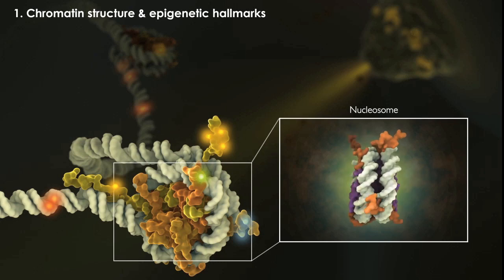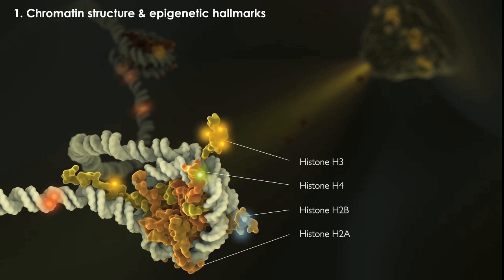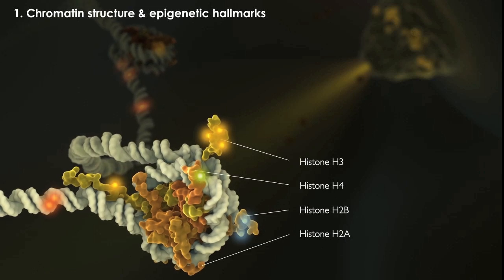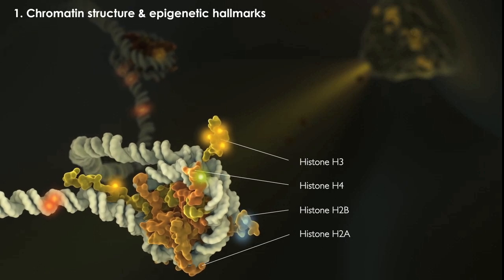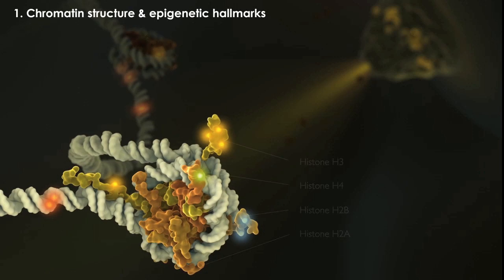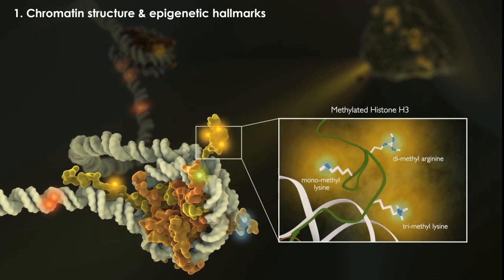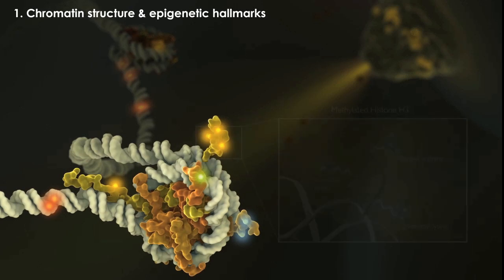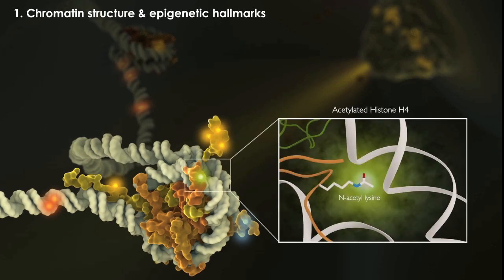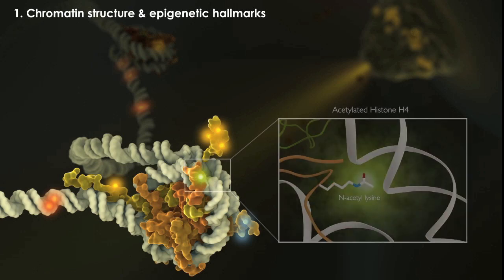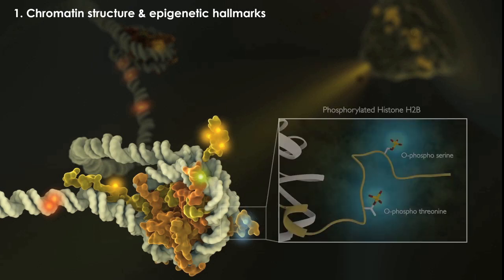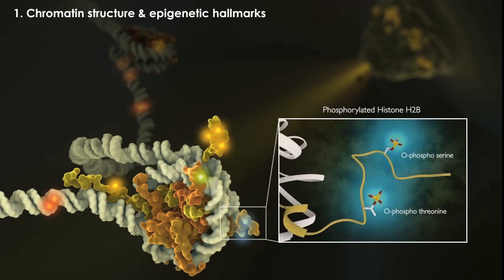The tails of core histones, labeled here, can be altered with distinct chemical modifications, including methylation of histone H3, acetylation of histone H4, and phosphorylation of histone H2B.